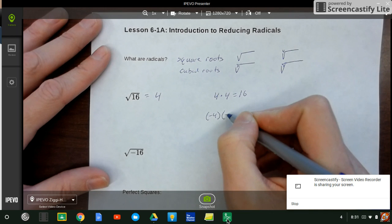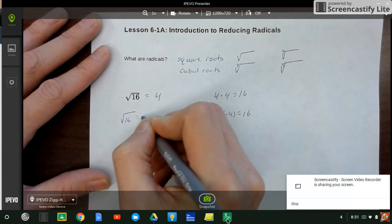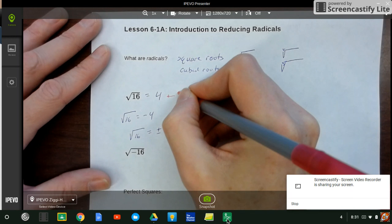Let me pose another question to you here. What is negative 4 times negative 4? That's also 16. So when we have that type of problem, we could also say that the square root of 16 could also be negative 4. So sometimes you'll see people say the square root of 16 is positive or negative 4.